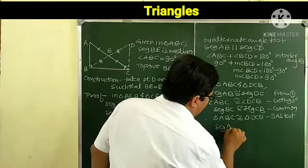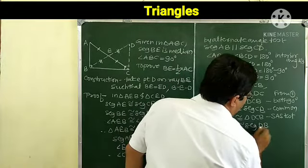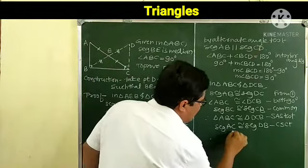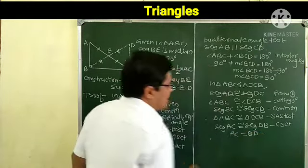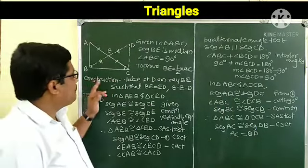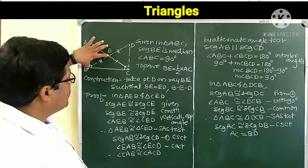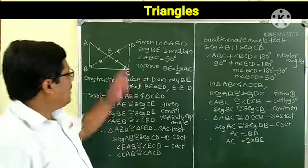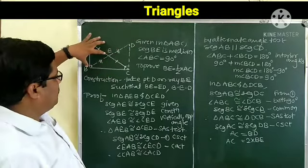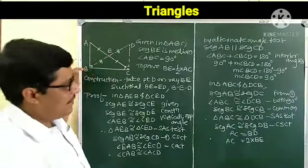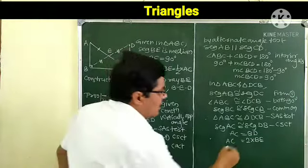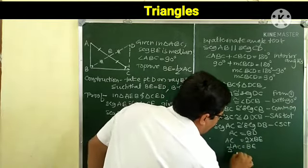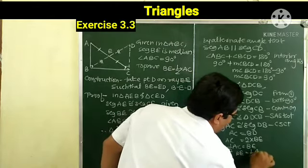From the congruent triangles, segment AC is congruent to segment BD — corresponding sides of congruent triangles. So AC equals BD. Therefore BD equals AC. Since BE equals ED and BD equals AC, we can write BE equals 1 upon 2 times AC — hence the median on the hypotenuse is half of the hypotenuse.